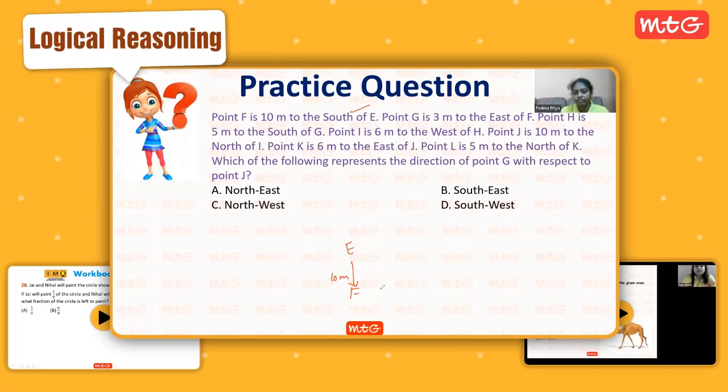Three meters, we have G. Next, point H is five meters to the south of G. So south of G, five meters, we have H. Now I is six meters to the west of H. I don't have space, let me go here. Point I is six meters to the west of H. Next, J is ten meters to the north of I, so ten meters to the north of I.